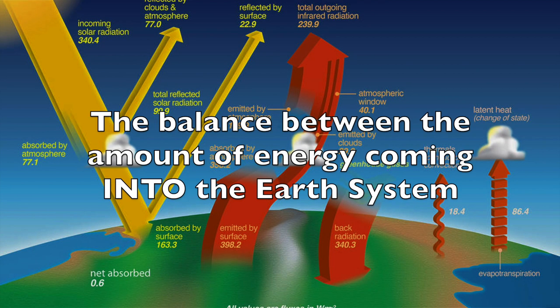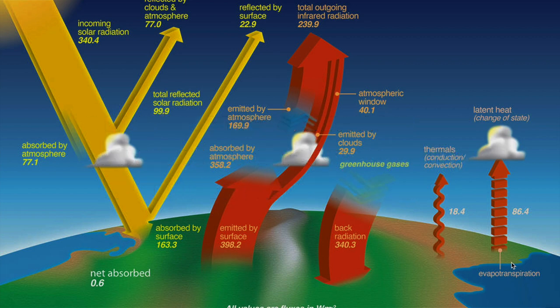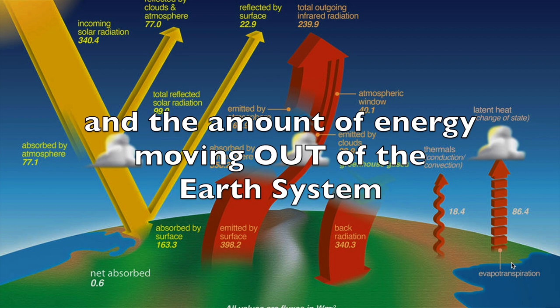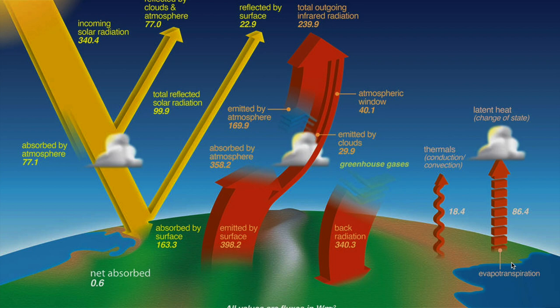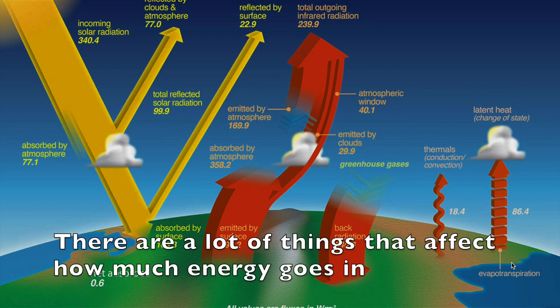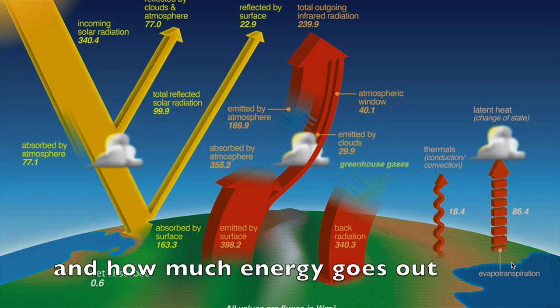Earth's energy budget is the balance between the amount of energy coming into the earth system and the amount of energy moving out of the earth system. This energy budget is complicated and there are a lot of things that affect how much energy goes in and how much energy goes out.